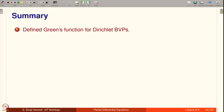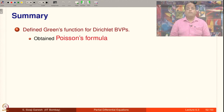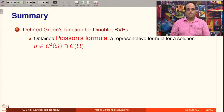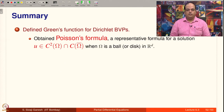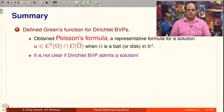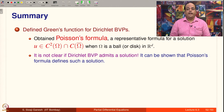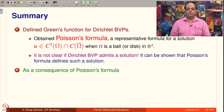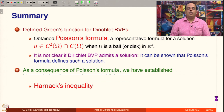To summarize: we have defined Green's function for Dirichlet boundary value problems and obtained Poisson's formula, which is a representative formula for a solution that is C^2 in Ω and continuous up to the boundary when Ω is a ball or disk in R^d. It can be shown that Poisson's formula actually defines such a solution, though existence is not fully proved here. As consequences of Poisson's formula, we have established Harnack's inequality and Liouville's theorem. Thank you.